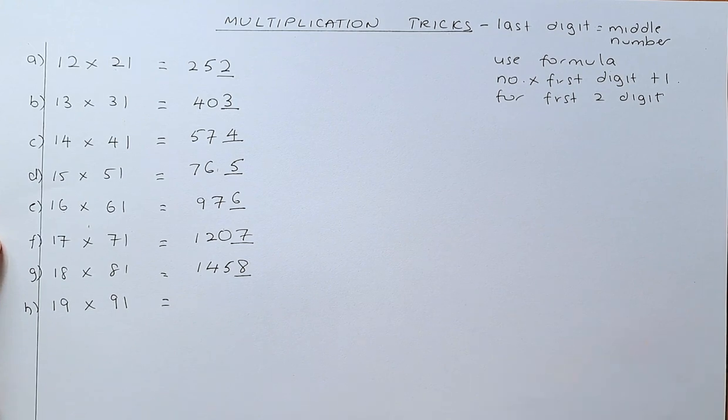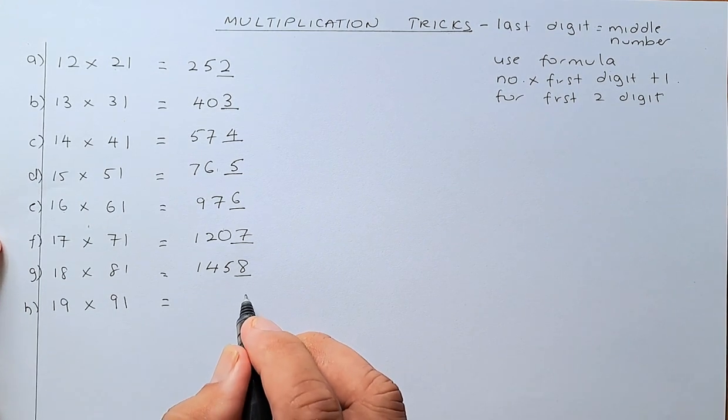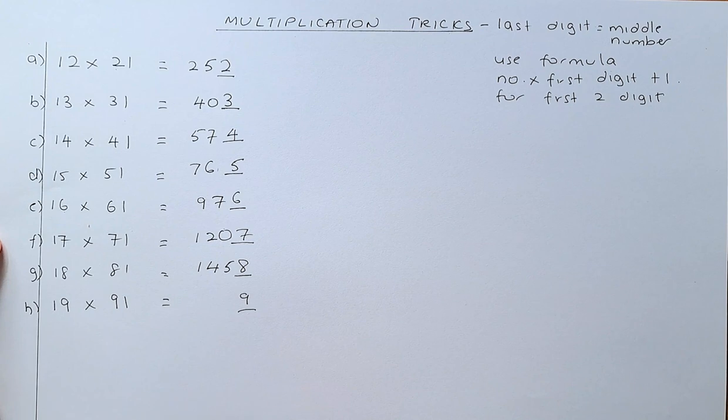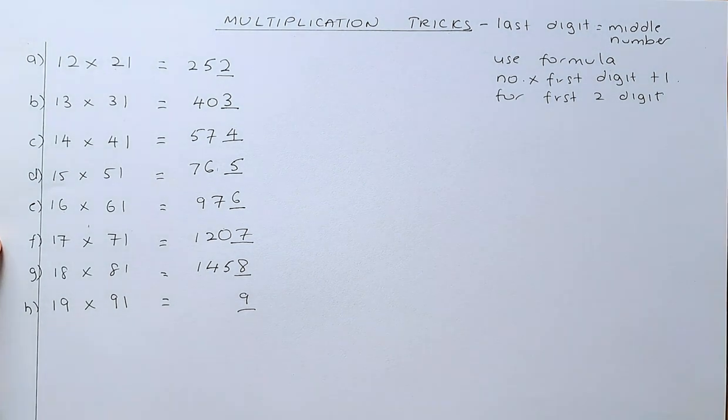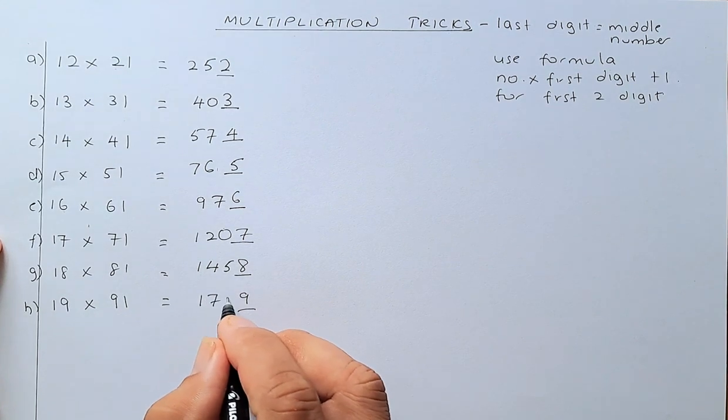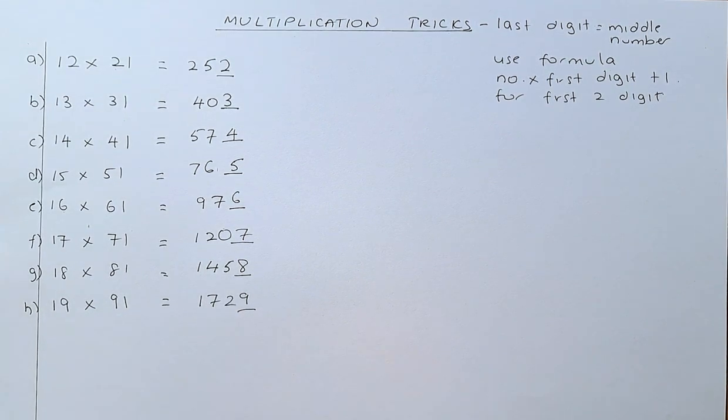And last but not least, 19 times 91. So, the last digit is going to be 9. 19 times 9 is going to be 171. And then, 171 plus 1 is 172. And the answer is going to be 1729.